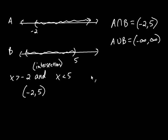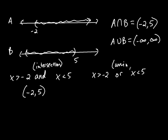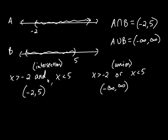If you want to denote union, we use the word 'or' instead of 'and.' So when you see 'or,' that means union. If somebody says solve x greater than negative two or x less than five, they want the union. And the union of those two sets is negative infinity to infinity. From henceforth, 'and' will mean intersection and 'or' will mean union.